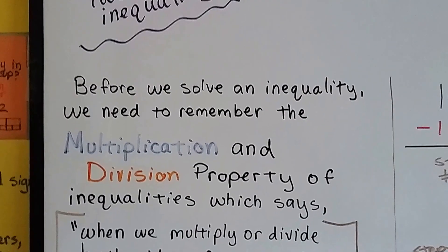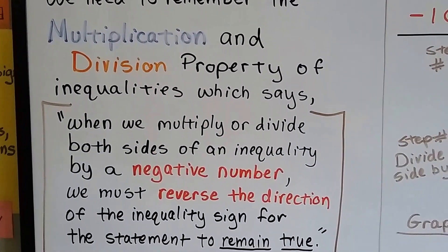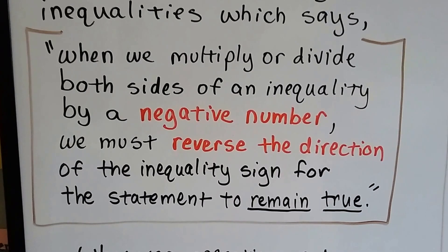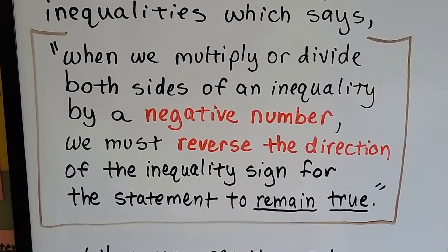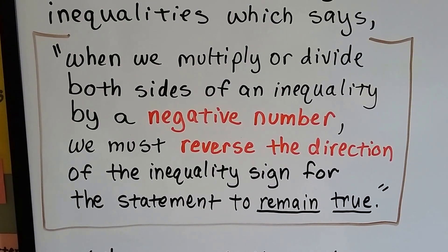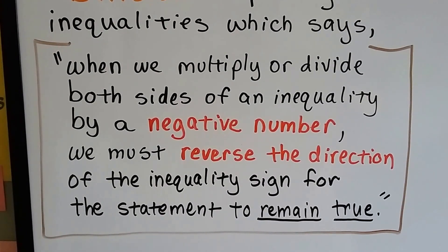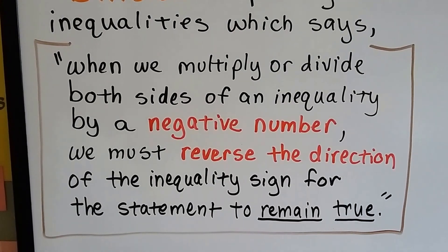Before we solve an inequality, we need to remember the multiplication and division property of inequalities, which says when we multiply or divide both sides of an inequality by a negative number, we must reverse the direction of the inequality sign for the statement to remain true. So that's multiplying or dividing both sides by a negative number.